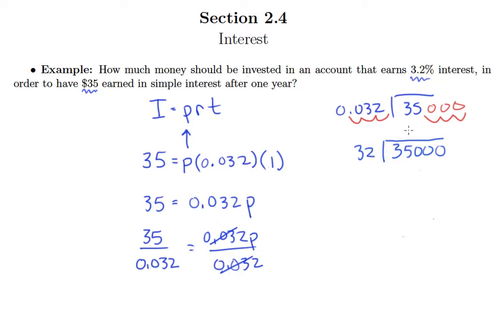Alright so 32 goes into 35 one time with a remainder of 3. If we drop a 0 down 32 does not go into 30. So we'll put a 0. 32 goes into 30 9 times. Okay 28. And we get a remainder of 12 from that dropping down the 0.